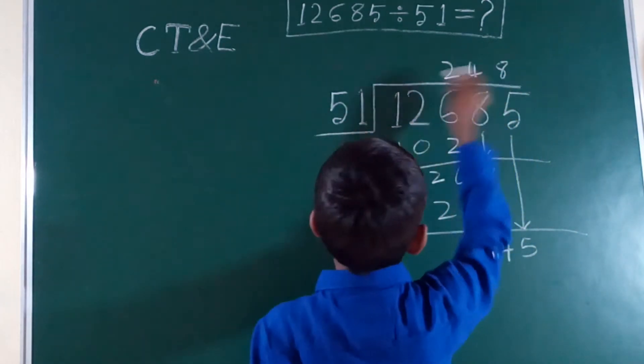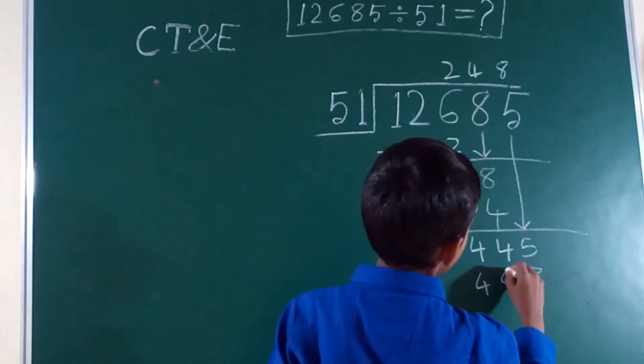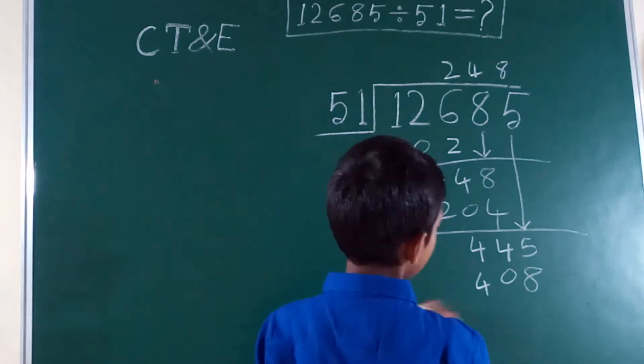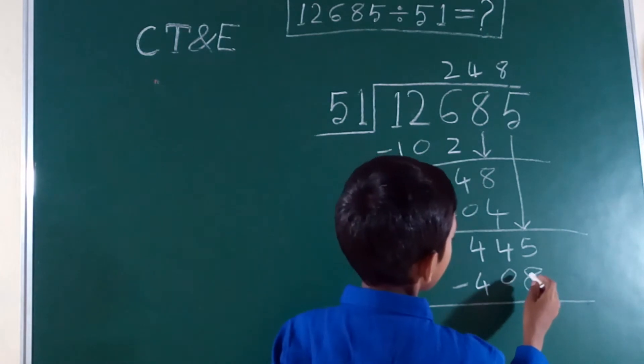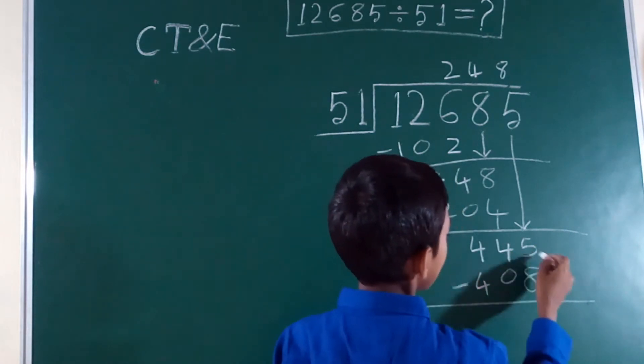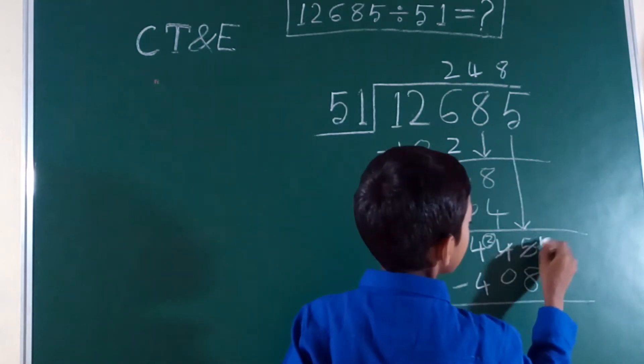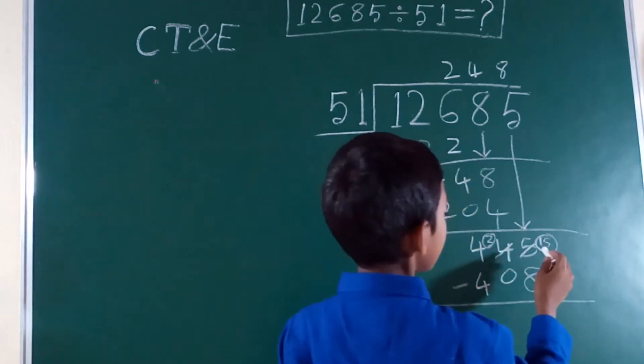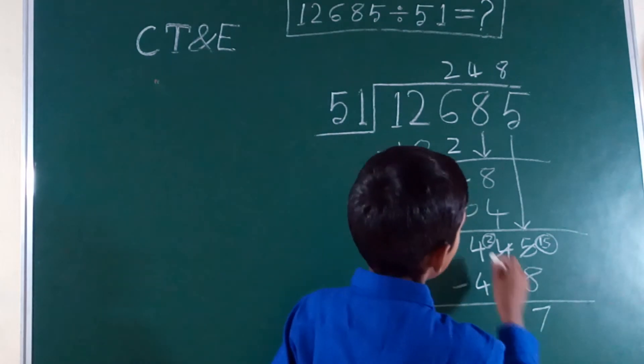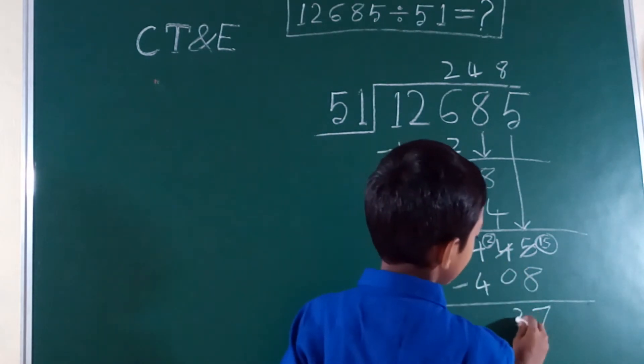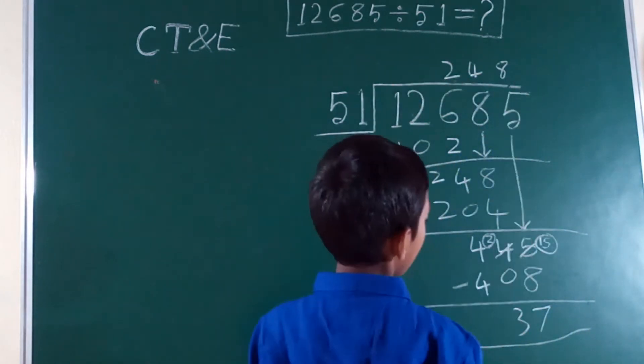8 times 1 is 8, 8 times 5 is 40. We got 408. 5 minus 8 is not possible, so we have to take 1 from the tens place. So 4 becomes 3 and 5 becomes 15. 15 minus 8 is 7. 3 minus 0 is 3. The quotient is 248 and the remainder is 37.